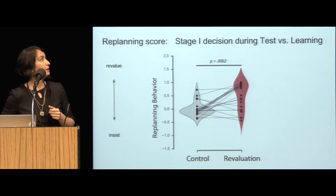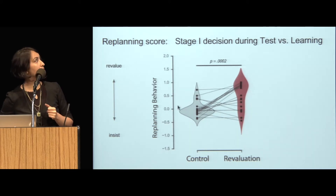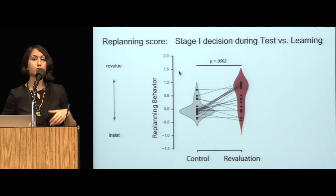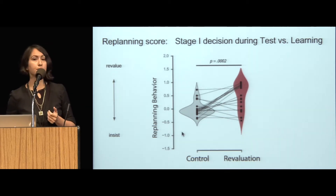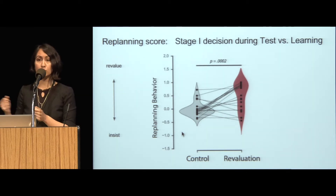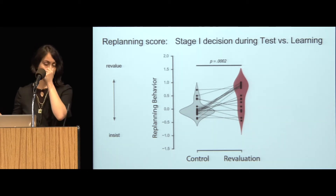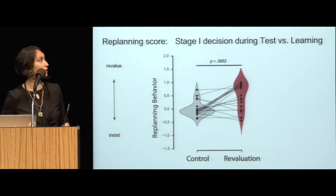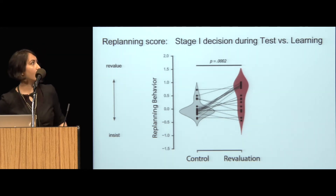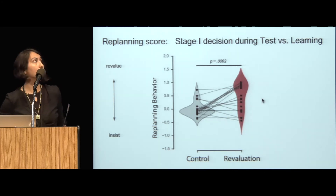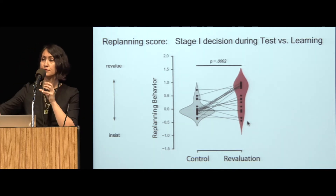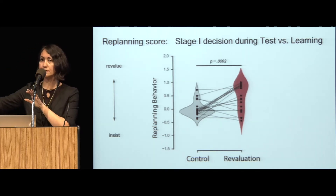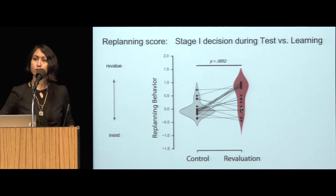As a measure of behavioral replanning score, we compare the stage one decision at the test phase — after they had experienced the relearning phase — with the same decision during the learning phase to see how that has differed. To the extent that they had shifted their decision, that gives us a replanning score. The more positive you are in this replanning score, it means that you revalued or reversed what you were doing before. The more negative you are, it means not only did you not change, you're actually more likely to choose what you were choosing in the first learning phase. There is a clear difference between the revaluation condition and control condition in replanning, but there are individual differences. All I'm going to show you now is that the evidence for replay during those rest periods is going to correlate with these individual differences.